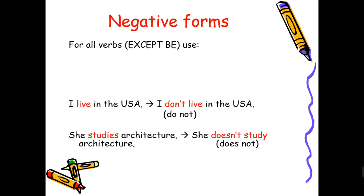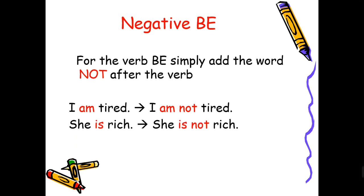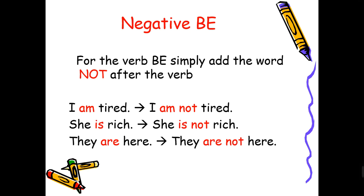How do we put it in the negative? Just like most English tenses, we use 'not.' You need to add the auxiliary verb 'do,' so you say 'don't' or 'doesn't' according to the subject. I, you, we, they use 'don't'; he, she, it use 'doesn't,' followed by the verb. For example: 'I live in the USA' becomes 'I don't live in the USA.' 'She studies architecture' becomes 'She doesn't study architecture.' For verb to be, simply add 'not' after the verb: 'I am not tired,' 'She is not rich,' 'They are not here.'